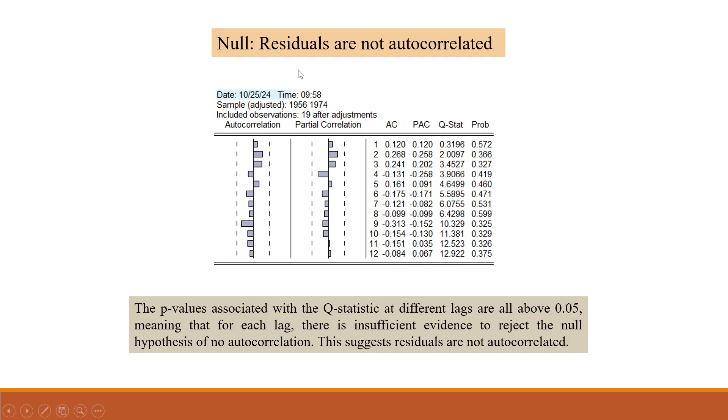So let's do the interpretation for this chart. Null hypothesis is residuals are not autocorrelated. See the probability values, the p-values associated with the q-statistics at different lags are all above 0.05, meaning that for each lag there is insufficient evidence to reject the null hypothesis of no autocorrelation. In simple language, there is no autocorrelation in the residuals.